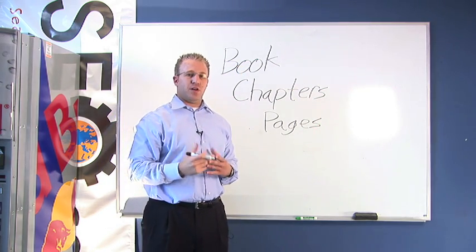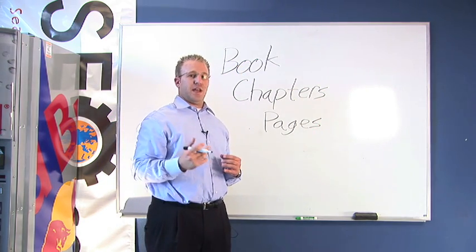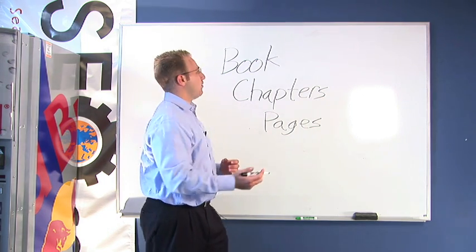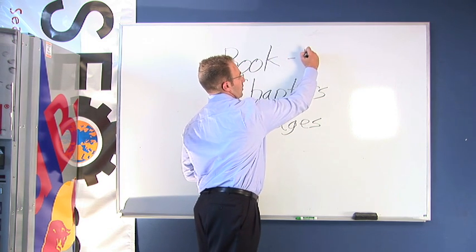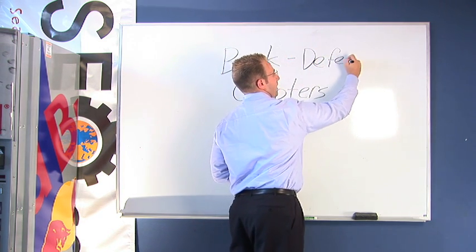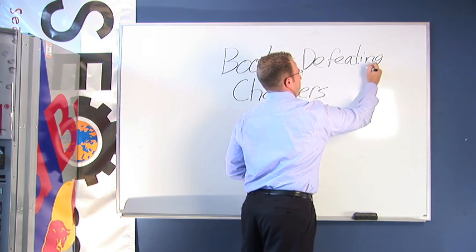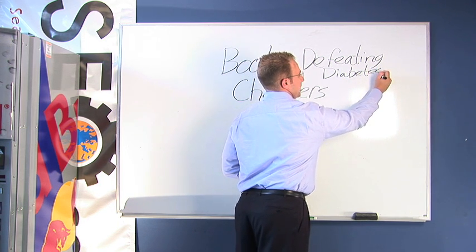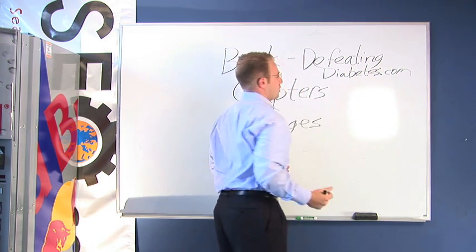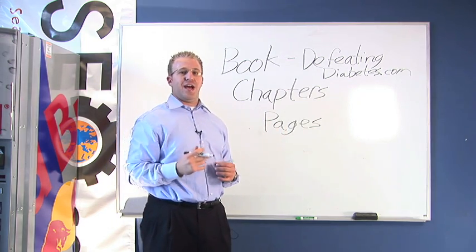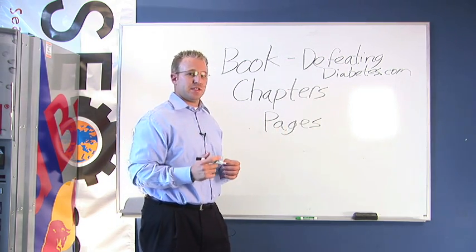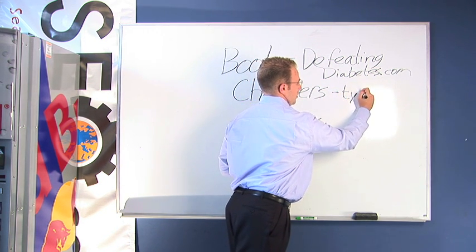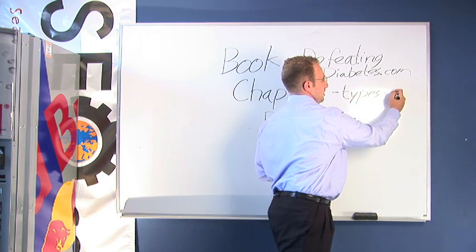I'm going to use an example of a current website that we're building in-house at SEO.cc. The website is called Defeating Diabetes — this would be the title of your book: defeatingdiabetes.com. Then, from Defeating Diabetes, the first chapter we're actually going to have in the book has to do with types of diabetes, so we're going to name our first chapter 'Types of Diabetes'.